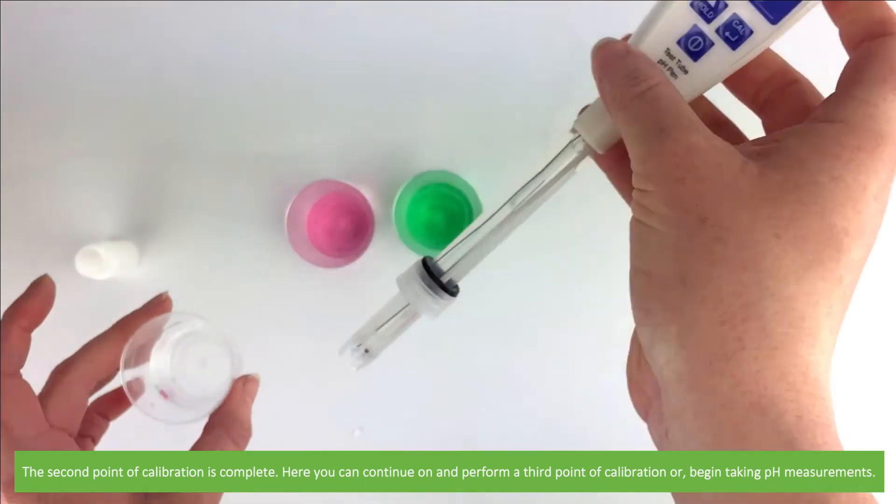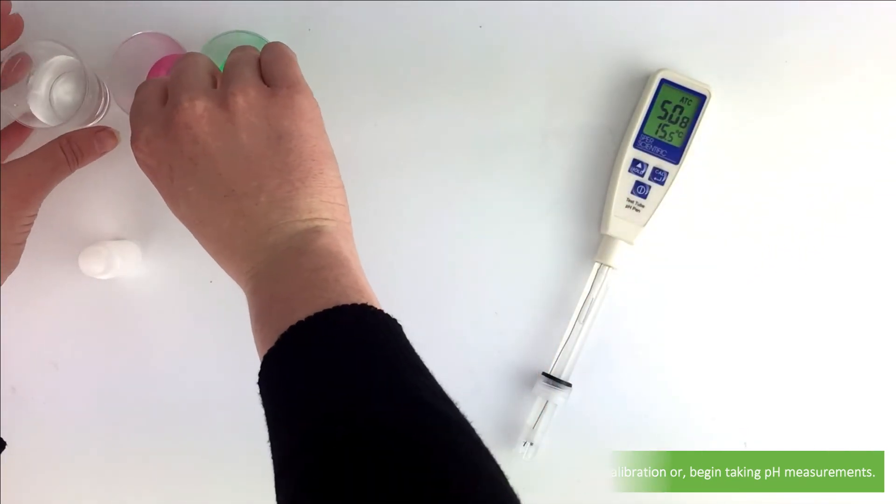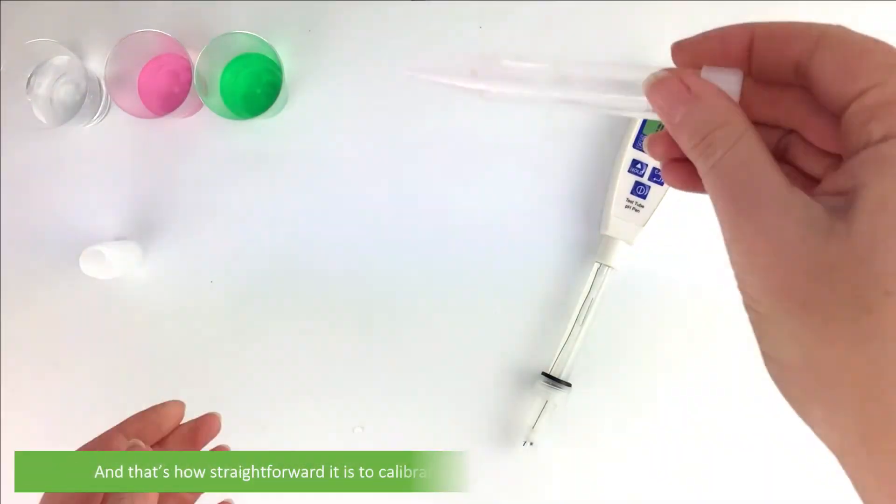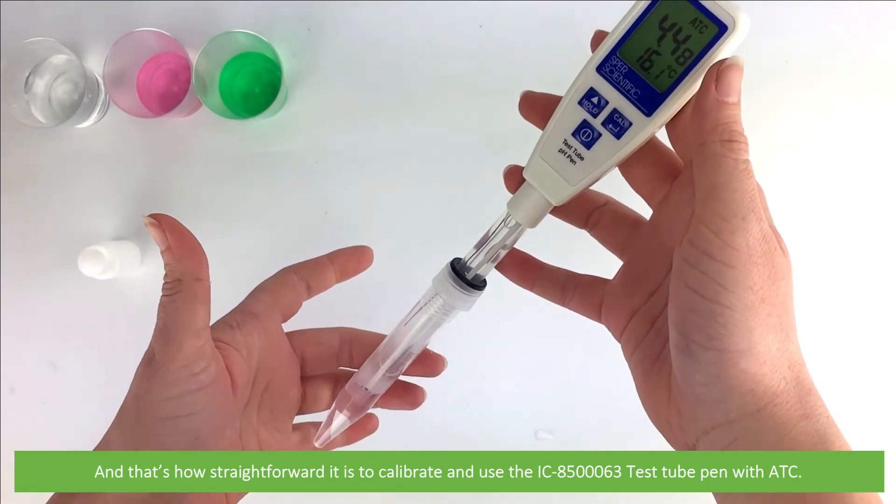Here you can continue on and perform a third point of calibration or begin taking pH measurements. And that's how straightforward it is to calibrate and use the IC850063 test tube pen with ATC.